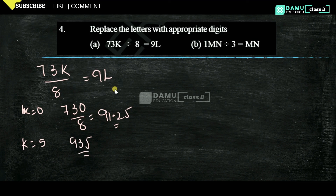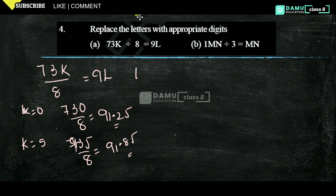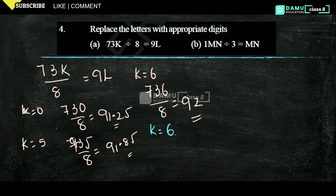So sorry, 735 divided by 8 gives 91.875. Then go with K equal to 6: 736 divided by 8 gives 92 — we get an integer. So K equals 6 and L equals 2.